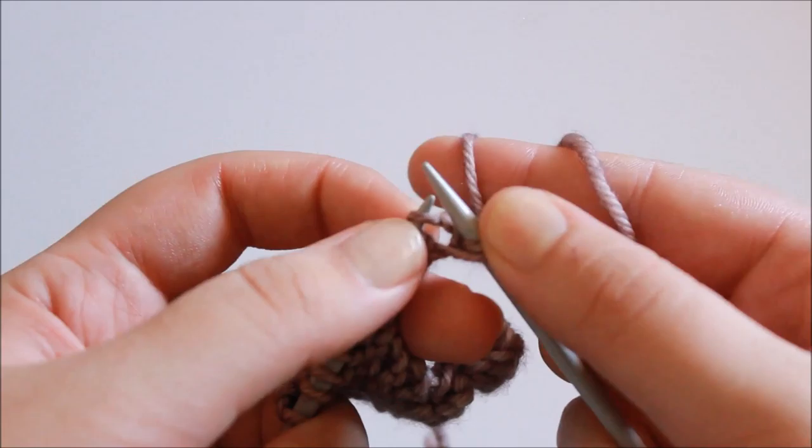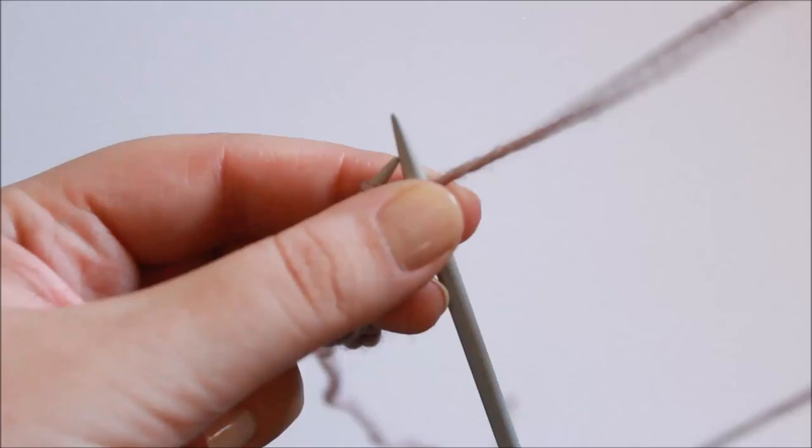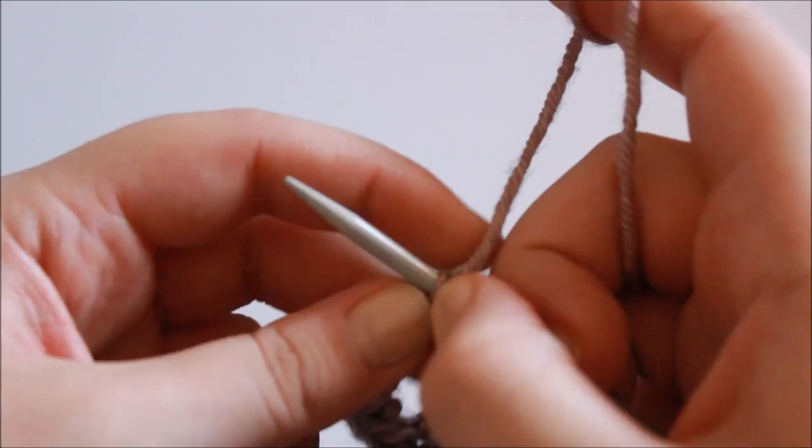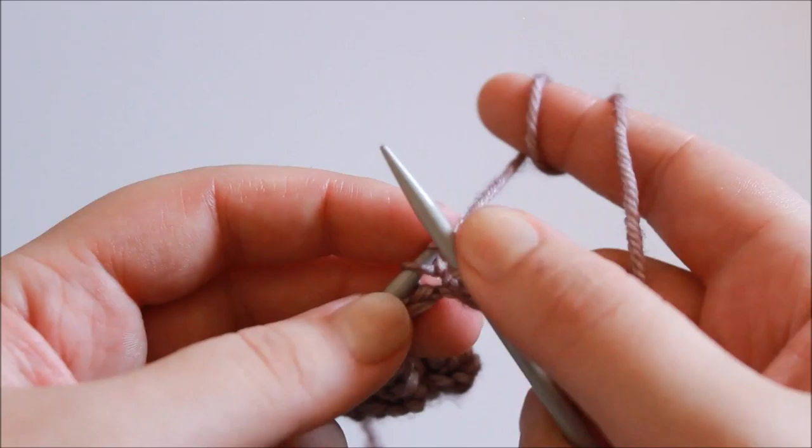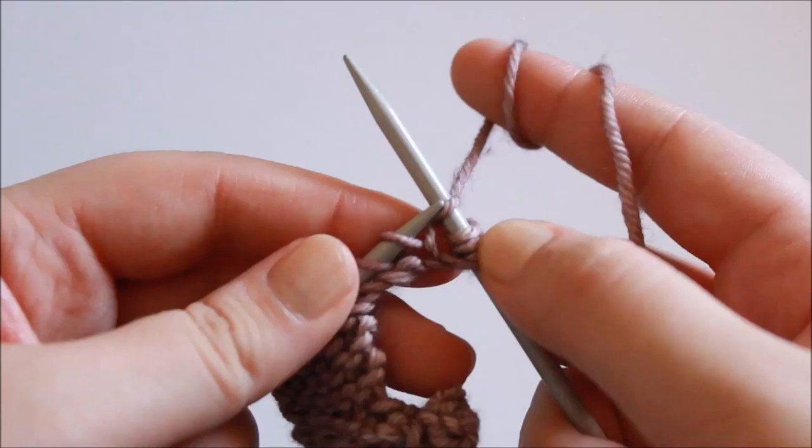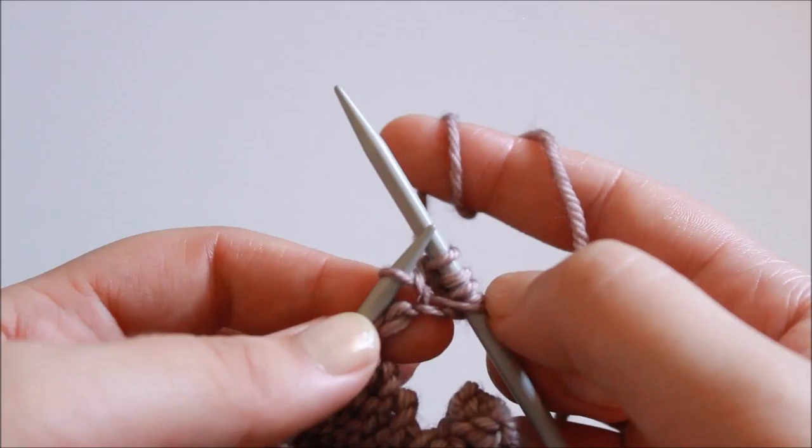Bring the working yarn to the back and knit the stitch. Bring the working yarn to the front and purl the stitch. Bring the working yarn to the back and knit the stitch. So we now have five stitches on our right hand needle from that one stitch that we began with.